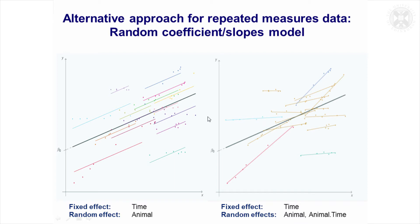That's one way to fit a mixed model, but it might be the case that the slopes are varying randomly between the animals, in which case you could fit a different slope for each of the animals.